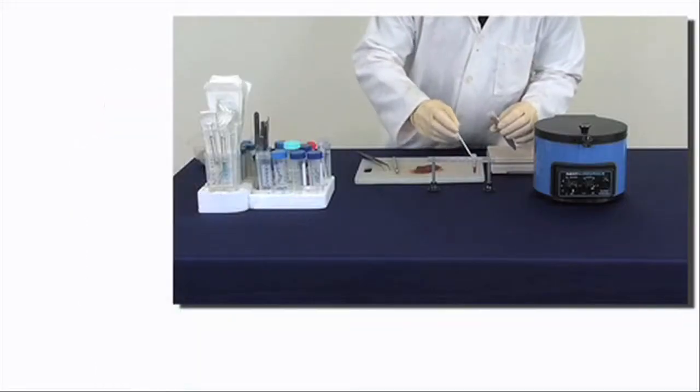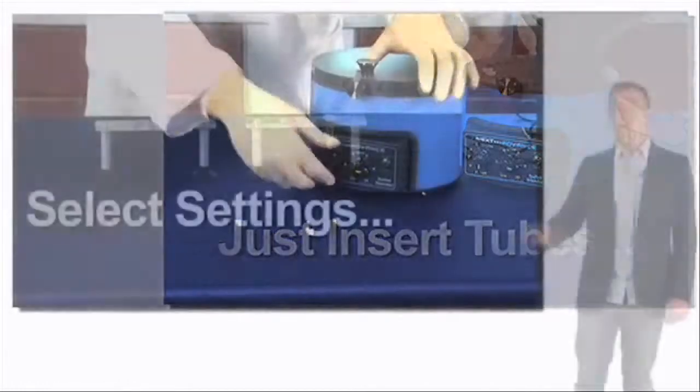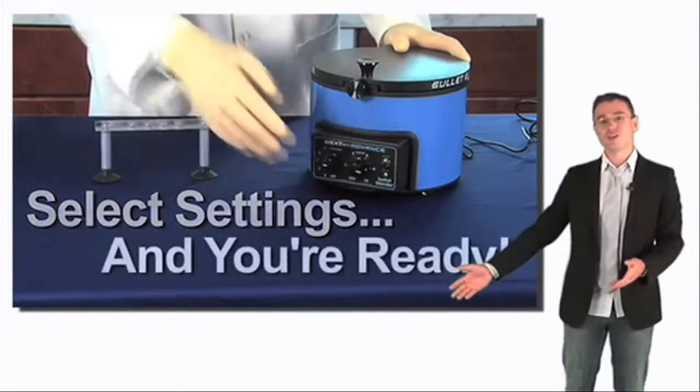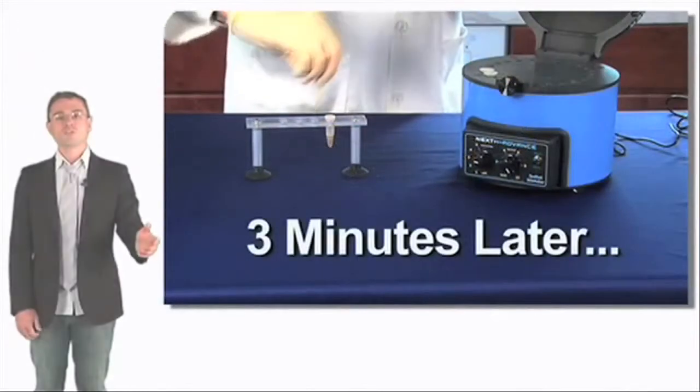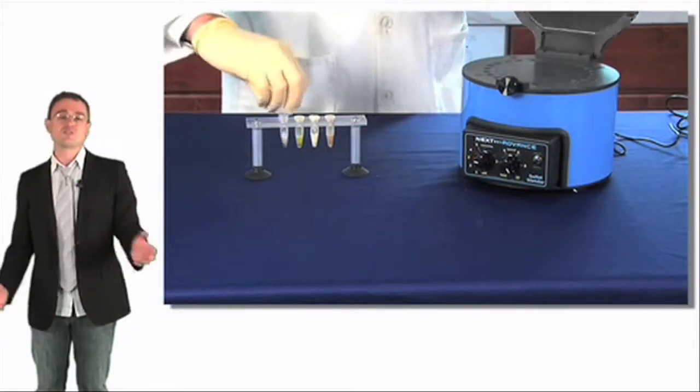Just add the beads, put the tubes in the holes, select the time and the speed, and press start. More time and a higher speed is for tougher samples, less time and a lower speed for softer samples.